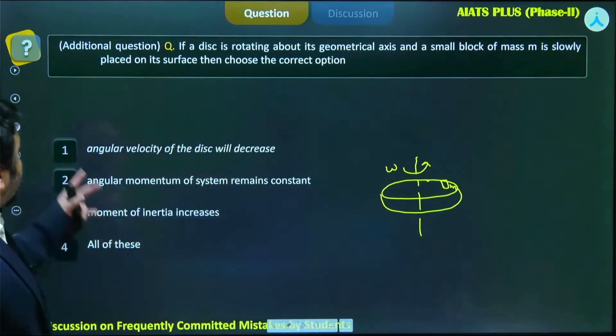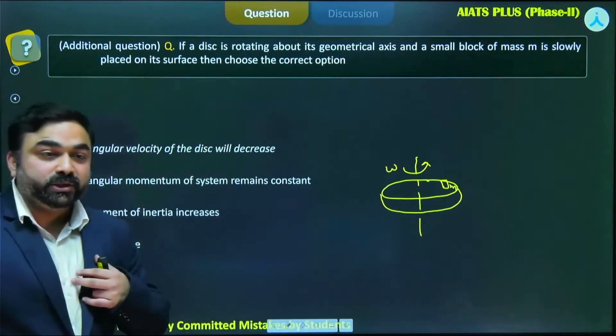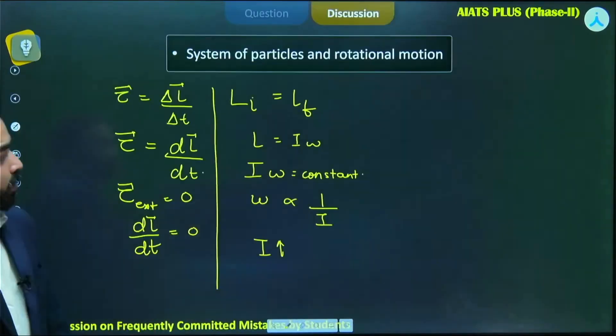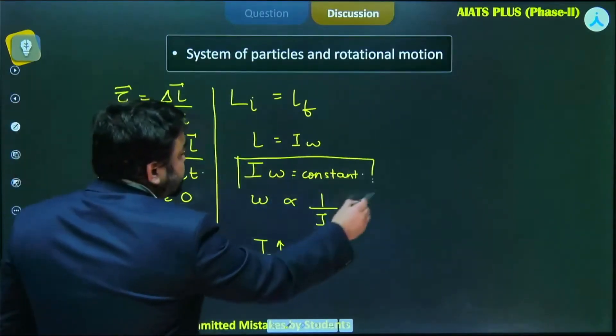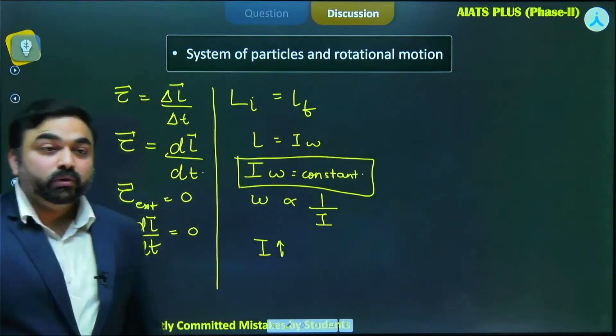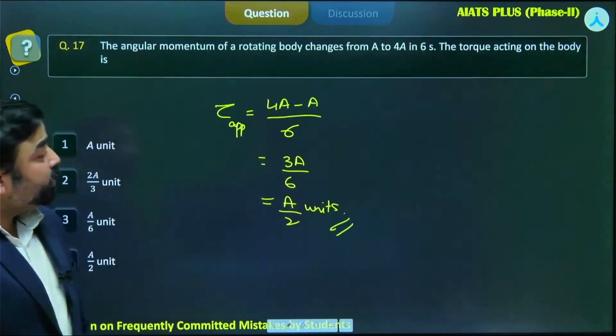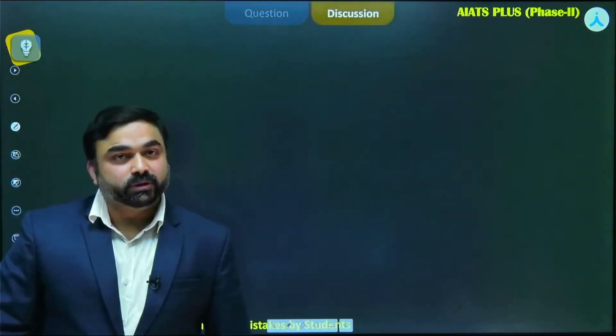Now we have to comment on these four options. It is based on this concept: I·ω = constant or ΔL = 0. If we employ the same concept here, option one says angular velocity of the disk will decrease.